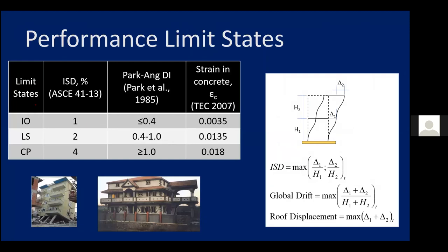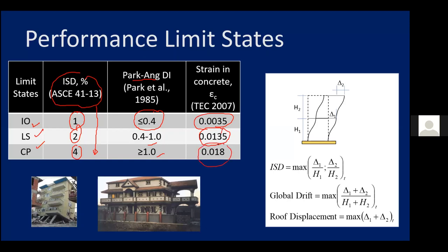People have also defined damage states in terms of inter-story drift (ISD). For example, IO, LS, and CP can be defined: IO at 1% ISD, Life Safety at 2%, and Collapse Prevention at 4%. There is another one — the Park and Ang damage index. Similar to the 1%, 2%, 4% drift limits, it is given with numbers like 0.4, 0.4–1, and greater than 1. People have also looked at strain in concrete: for example, 0.0035 for Life Safety and Collapse Prevention. These studies are available in the literature.